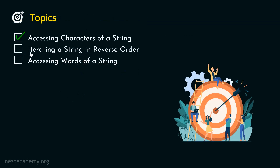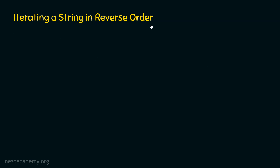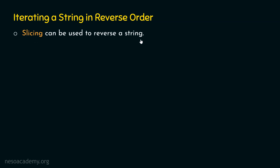Now let's move on to the next topic: iterating a string in reverse order. We know that we can access each character of a string using for loop. But how to access each character in reverse order? If we can reverse the string beforehand and provide that to the for loop, then the rest of the job will be done by for loop. In order to reverse a string, we can use slicing. Recall that slicing allows us to reverse a string, which we have learned already in one of our lectures.